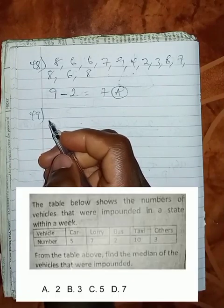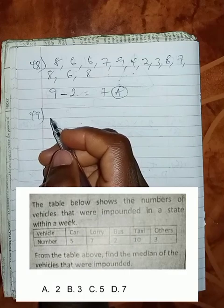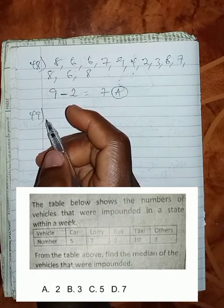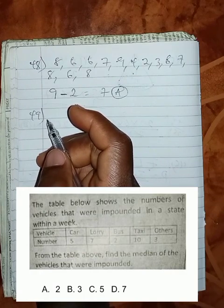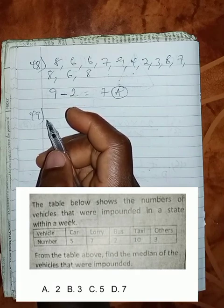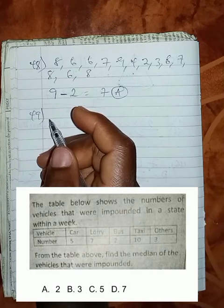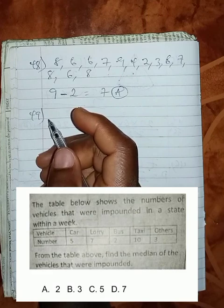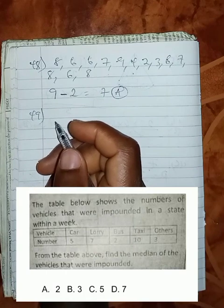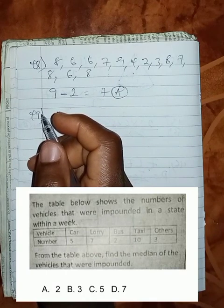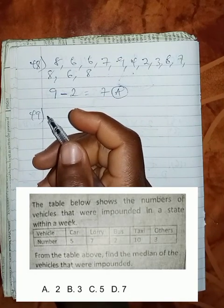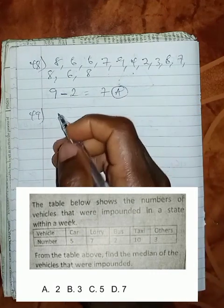Question 49: The table below shows the numbers of vehicles that were impounded in a state within a week. We can see that vehicles are car, lorry, bus, taxi, others, and the numbers are 5, 7, 2, 10, and 3. We are asked to find the median of the vehicles that were impounded from the table. What we can do is, we are going to sum up the total numbers first.